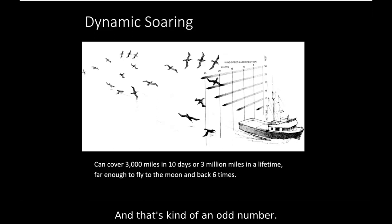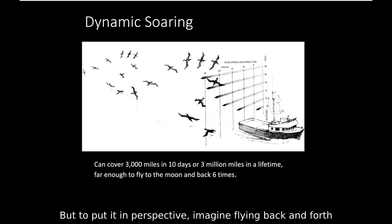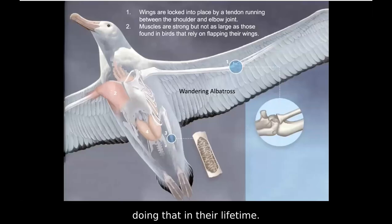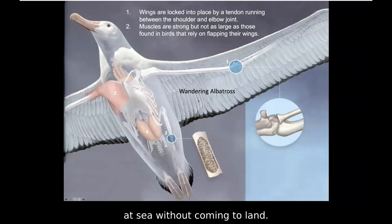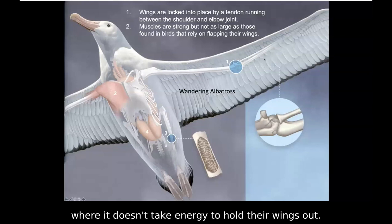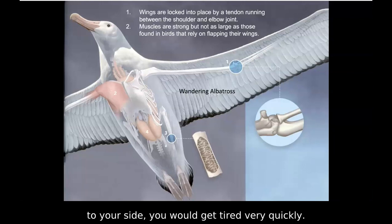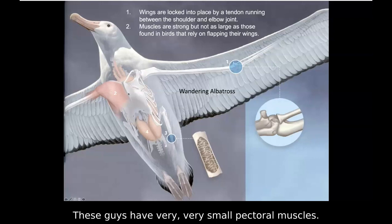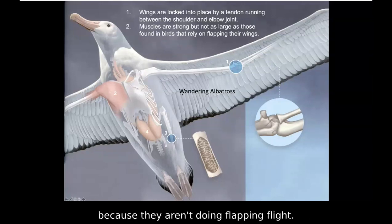Three million miles in a lifetime is hard to relate to — to put it in perspective, imagine flying back and forth to the moon six times. Anatomically they don't expend much energy because they spend years at sea without coming to land. They actually have a way to lock their wings in place so it takes no energy to hold them out. They also have very, very small pectoral muscles — unlike a chicken breast — because they aren't doing flapping flight at all.